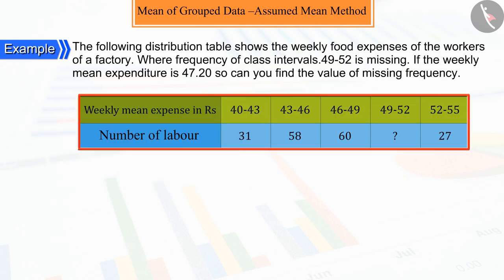The following distribution table shows the weekly food expenses of workers of a factory, where the frequency of class interval 49 to 52 is missing. If the weekly mean expenditure is 47 rupees 20 paise, can you find the value of missing frequency?